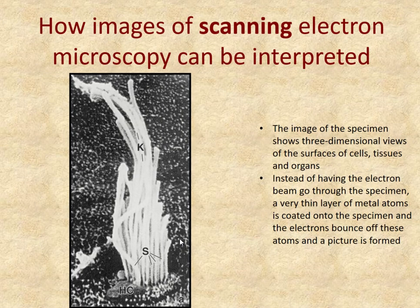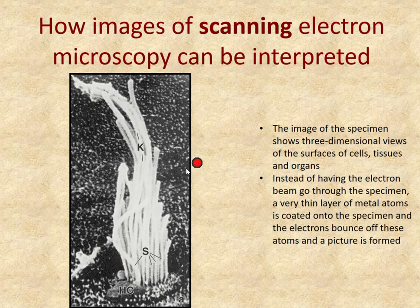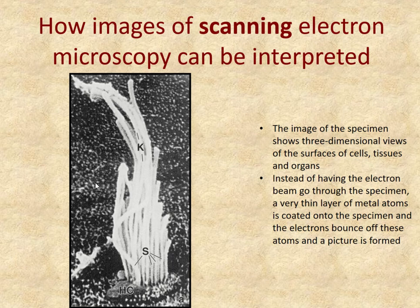The other type is scanning electron microscopy. Very small metal atoms are painted on the surface of a tissue, then the electron beam is pointed at the surface and bounces off to be sensed by a receiver. That receiver makes a picture that looks like a 3D image — like bouncing off the top. If you had something very textured and painted over it, you'd still see the texture. That's what's happening here — it's called scanning electron microscopy.